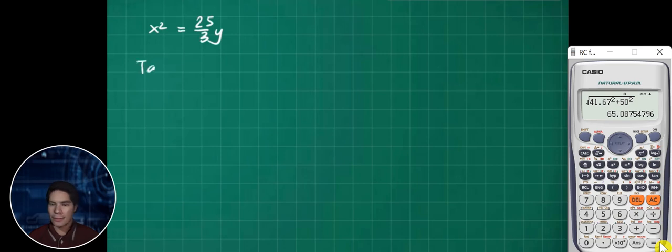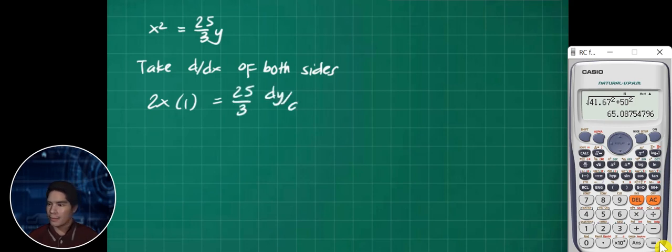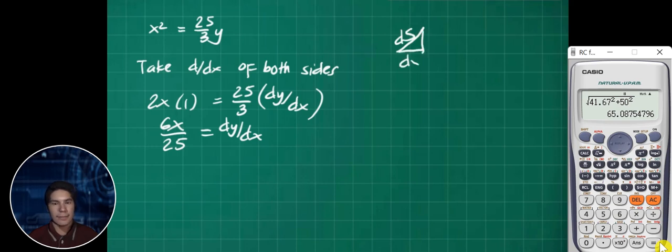Take the derivative of both sides. 2x dy/dx equals 25 over 3 dy/dx. Therefore we have 6x over 25, and this is equivalent to dy/dx.